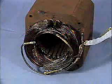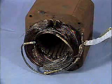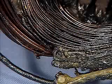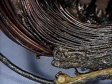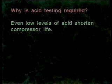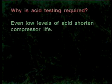Acid is damaging to the system and can cause internal corrosion and future compressor damage. Acid can etch the lacquer insulation off the compressor's motor windings, leading to compressor motor burnout. The more acid in the system, the faster the insulation is etched away, but even low levels of acid shorten compressor life. That's exactly why many times a retrofit compressor does not last as long as the original compressor.